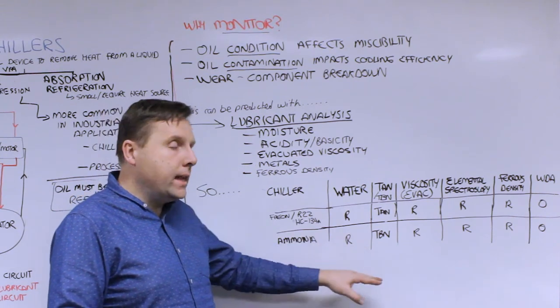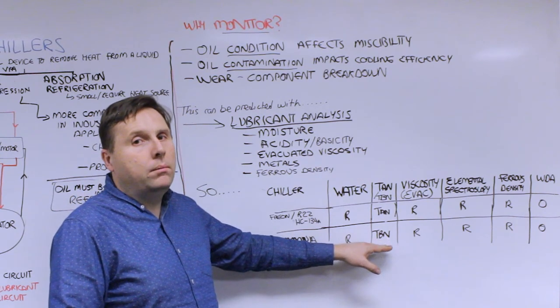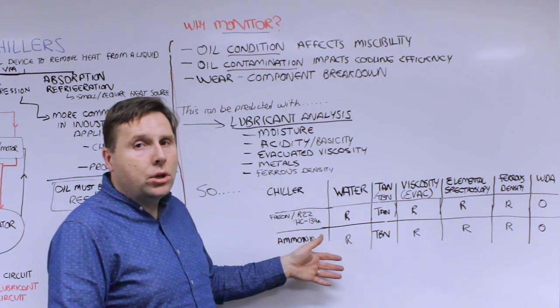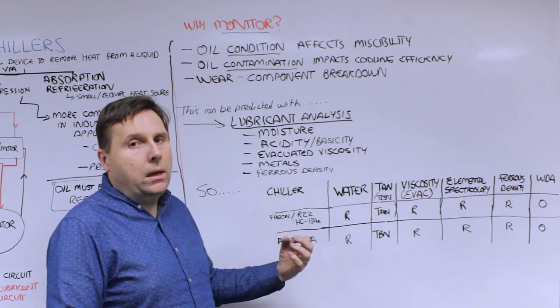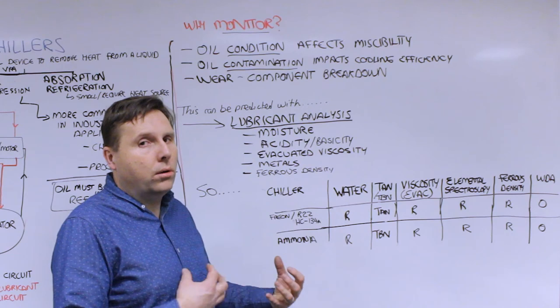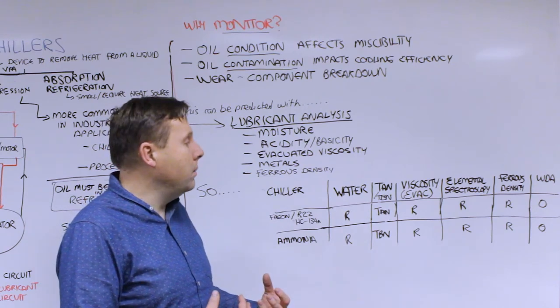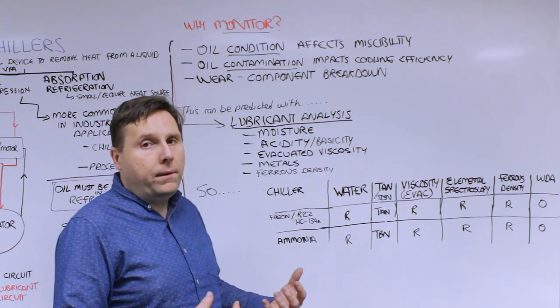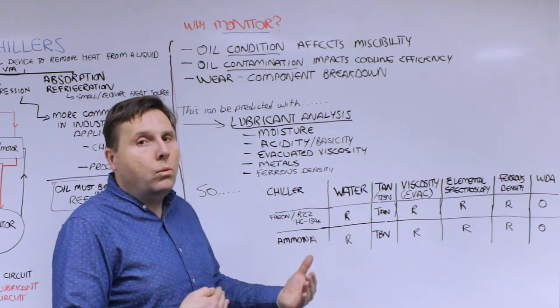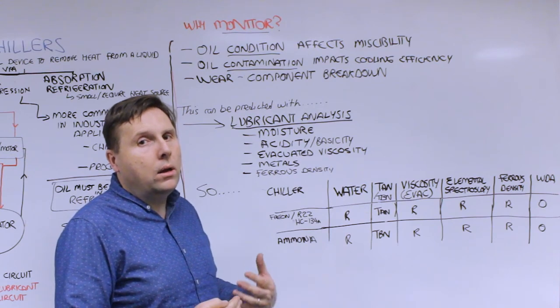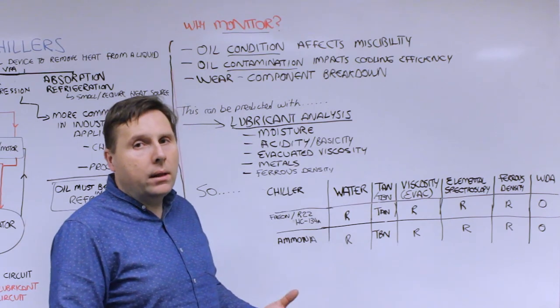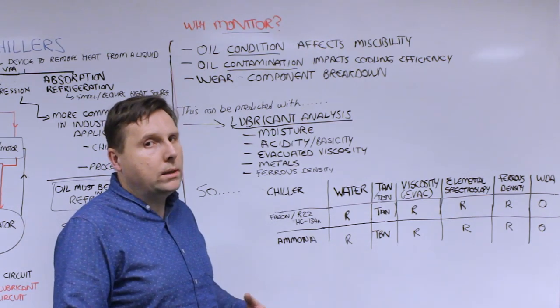High amounts of water present in a chiller can affect the evaporative capabilities, clog the check valve, and cause freeze issues. Acidity can affect the miscibility. If the viscosity is not within norms, it might indicate that the separator is not working properly and may need to be checked. Elemental spectroscopy tells you about wear metals as well as any additives that may be present, and ferrous density catches any large wear.